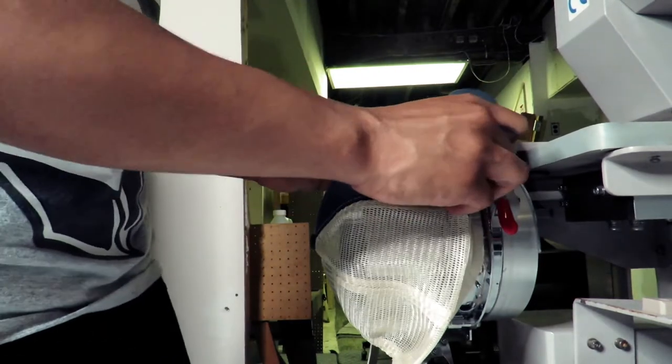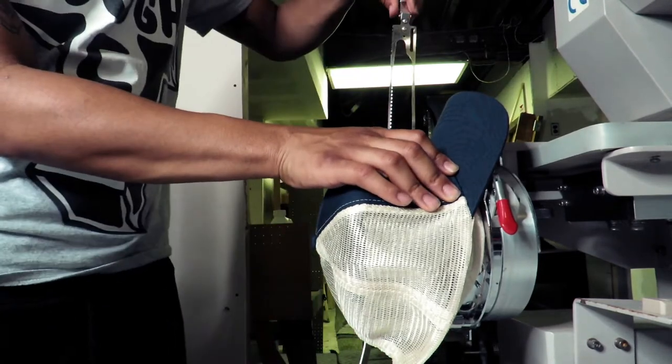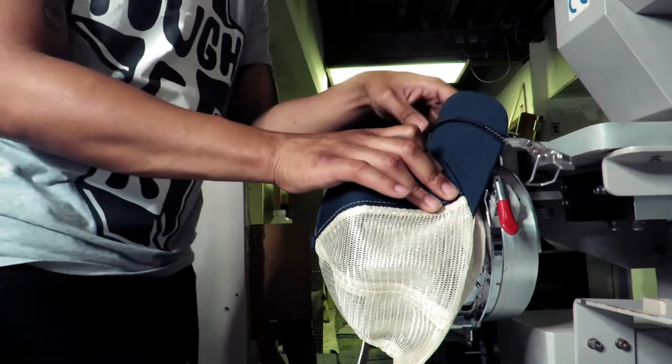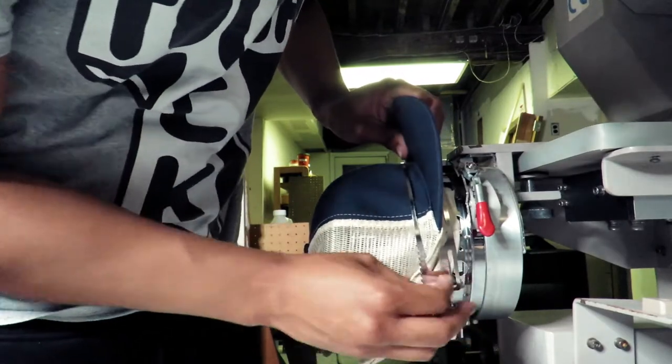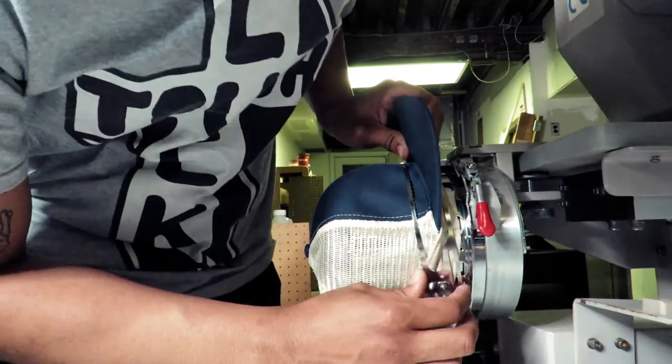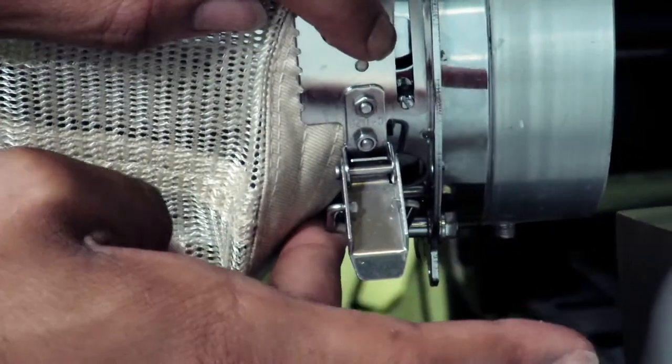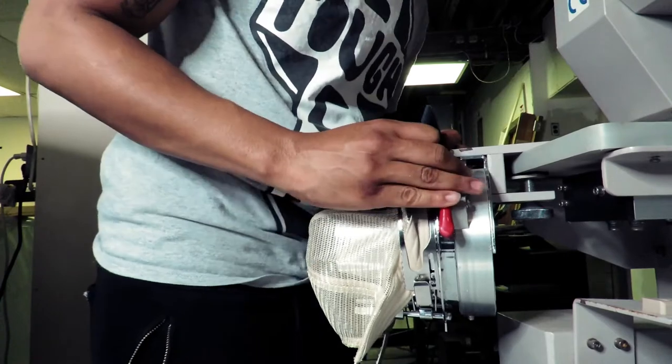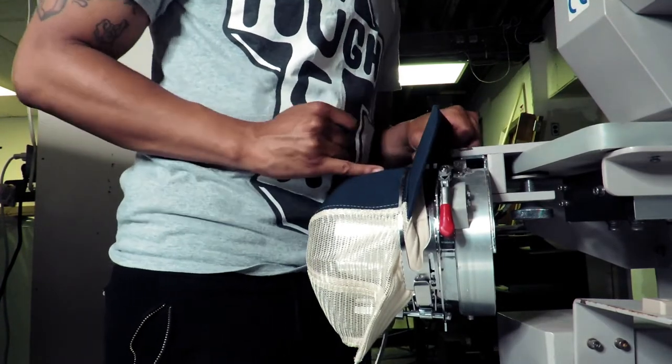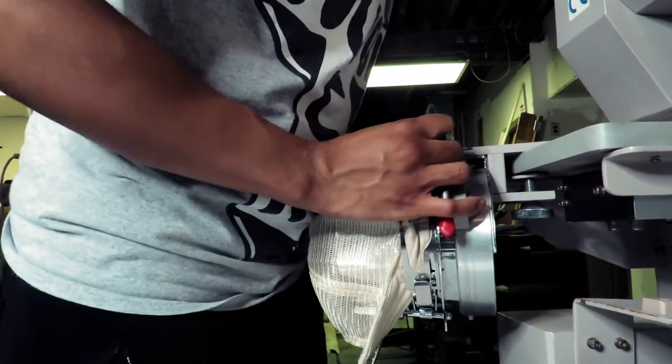Once you have that sweatband underneath you want to hold your hat firmly so it does not move and you want to take your securing strap for your hoop here. Run this little slide part here through that peg and clip that there and snap it down. Once again make sure that that red line is lined up with the front seam of your hat that you are embroidering.